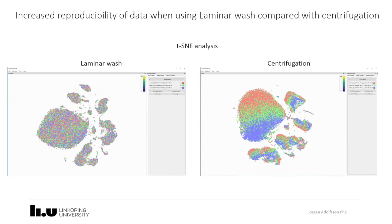Any thoughts on cost per sample? It's very obvious — using the laminar wash system you can reduce antibody cost by half, because you go down to 50 microliters compared to centrifugation while maintaining better reproducibility. In mass cytometry you can use up to 35 or 39 different antibodies per sample compared to 10 or 15 in normal flow, so reducing the amount of antibody needed per sample gives a very high cost benefit. Thanks everyone for attending.